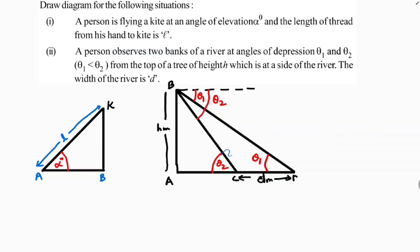A person observes two banks, one is C, the other one is D, two banks of a river at angle of depressions theta 1 and theta 2, and theta 1 is less than theta 2, so theta 2 is greater. So I took here greater angle from the top of a tree of height h meters which is at a side of river. The width of the river is d meters. So two banks, that's why I consider this as C to D is river. C is one bank of the river, D is another bank of the river.